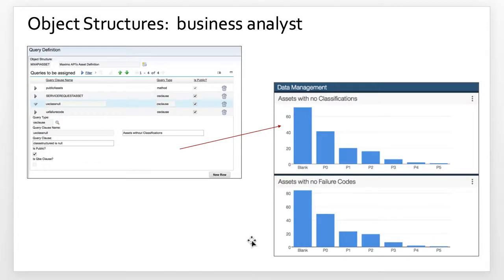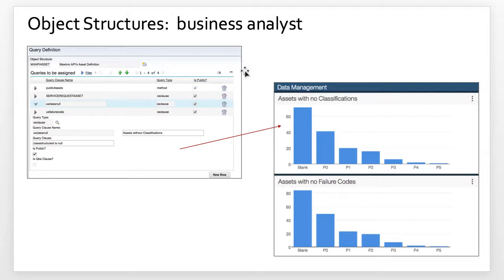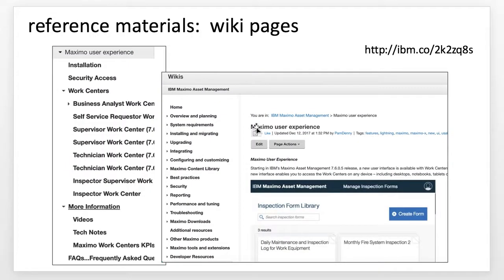Our business analyst is also very focused on data quality. She has a couple of charts or metrics trying to understand how complete the data is within their Maximo environment — for example, looking at assets with no classifications and failure codes. Here is the object structure associated with those two charts and the queries that are driving the data — the queries drive the data that displays within the content.